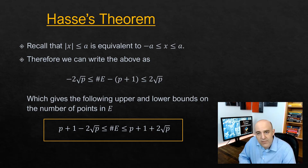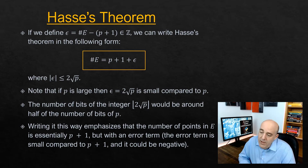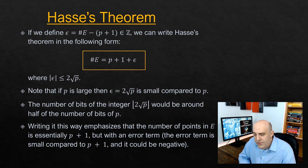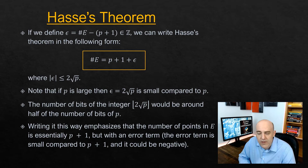The number of points in E is always trapped between those two bounds, and that's true for any elliptic curve over F_P no matter what A and B are. We can rephrase Hasse's theorem: if we define epsilon to be #E minus (P+1), that's an integer and it could be negative. We can express Hasse's theorem as: #E = P+1 + ε, where ε is some integer whose absolute value is less than or equal to 2√P.